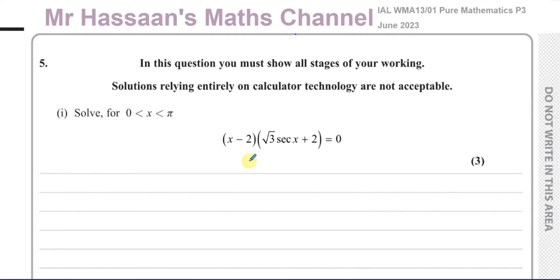In this question, you must show all stages of your working — solutions relying entirely on calculator technology are not acceptable. We've got to solve, for values of x between zero and pi, the equation (x − 2)(√3 sec x + 2) = 0.